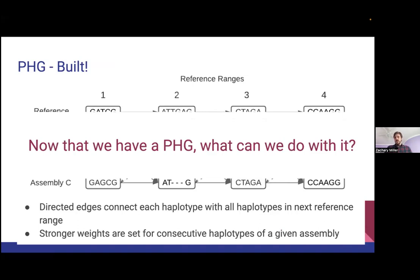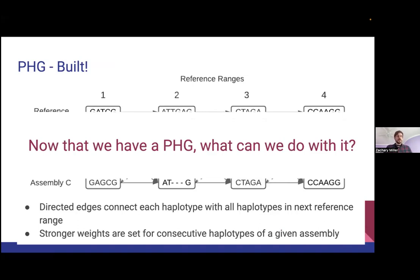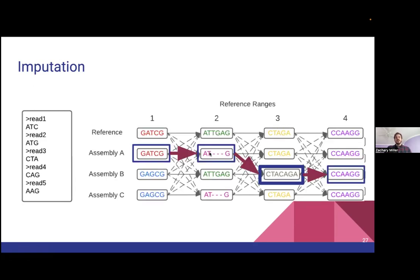So what can we do with it now that we have a PHG? The main use case is imputation. Say you have a set of short reads — usually about 150 base pair. Given a FASTA file of a bunch of reads and given a graph, can we find a path through this graph that will allow us to impute missing data? We can have thousands of samples at very low depths. The beauty of the PHG is we can use any sort of technology as input — we're not very picky, pretty much as long as it's in a FASTQ file we'll load it in.